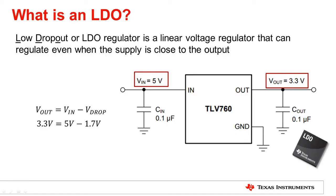In the example on the right, we have a 5-volt input going into our LDO, the TLV760, and our output is internally set for 3.3 volts. Therefore, our dropout voltage is 1.7 volts. The power from the voltage differential will then be dissipated as heat from the LDO.